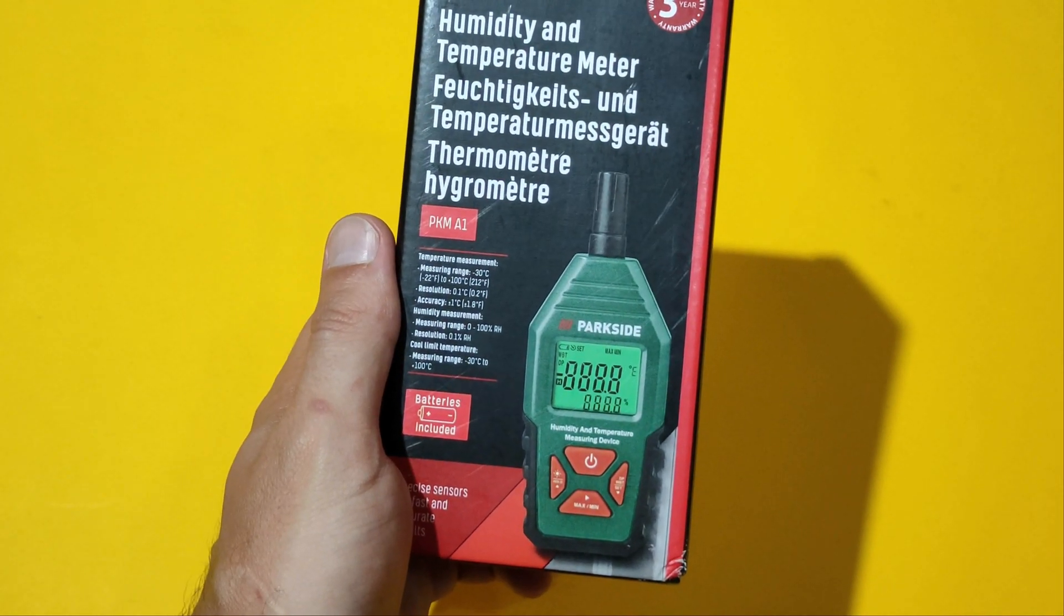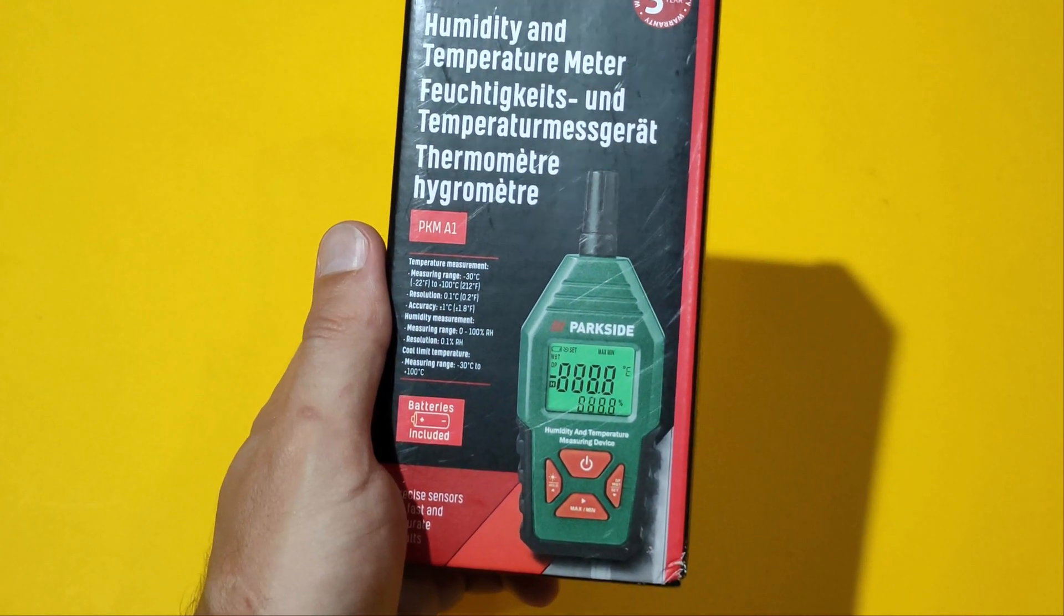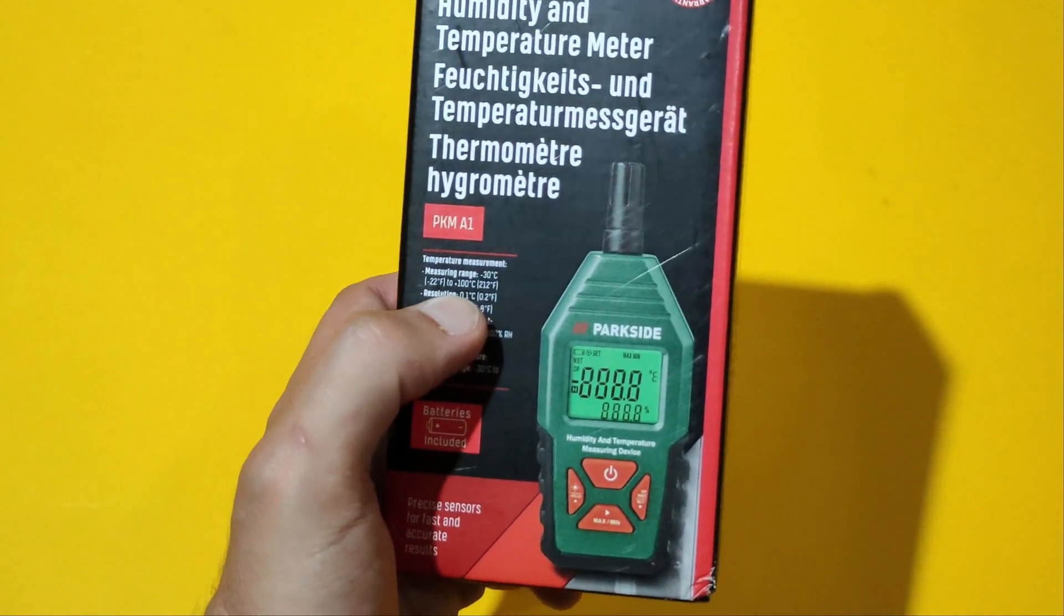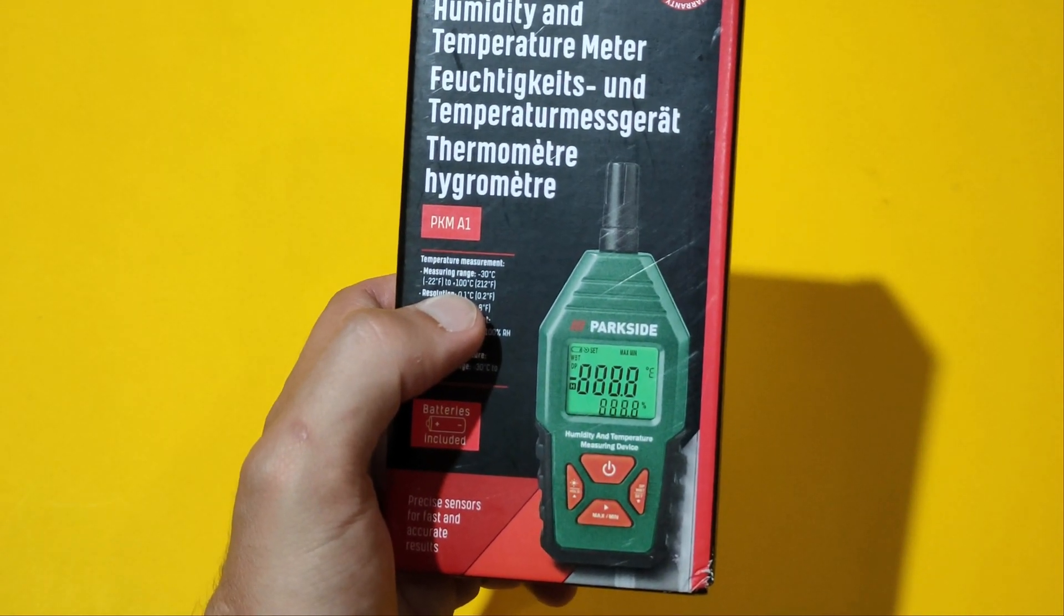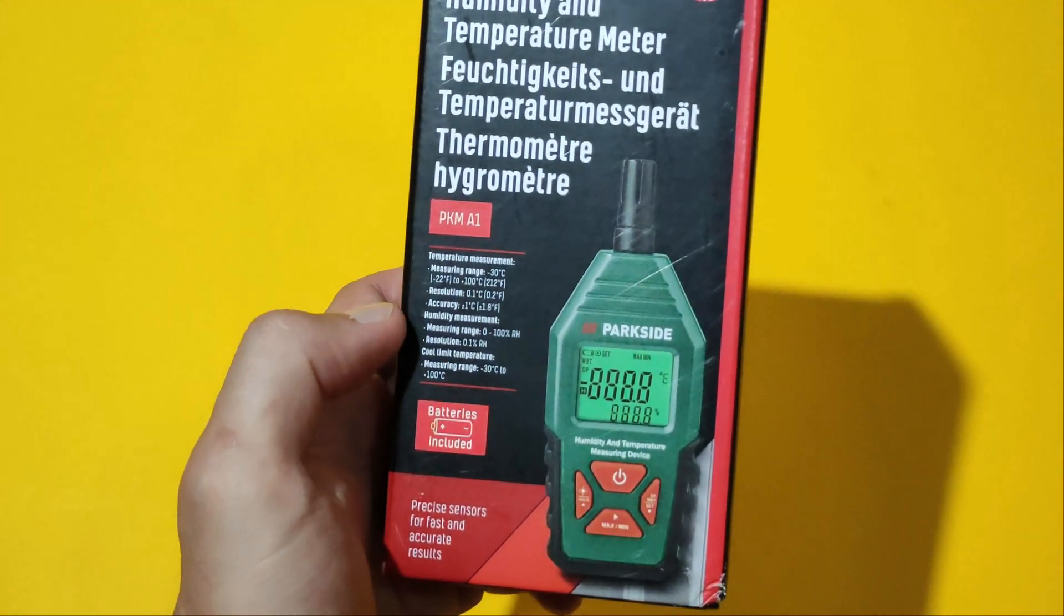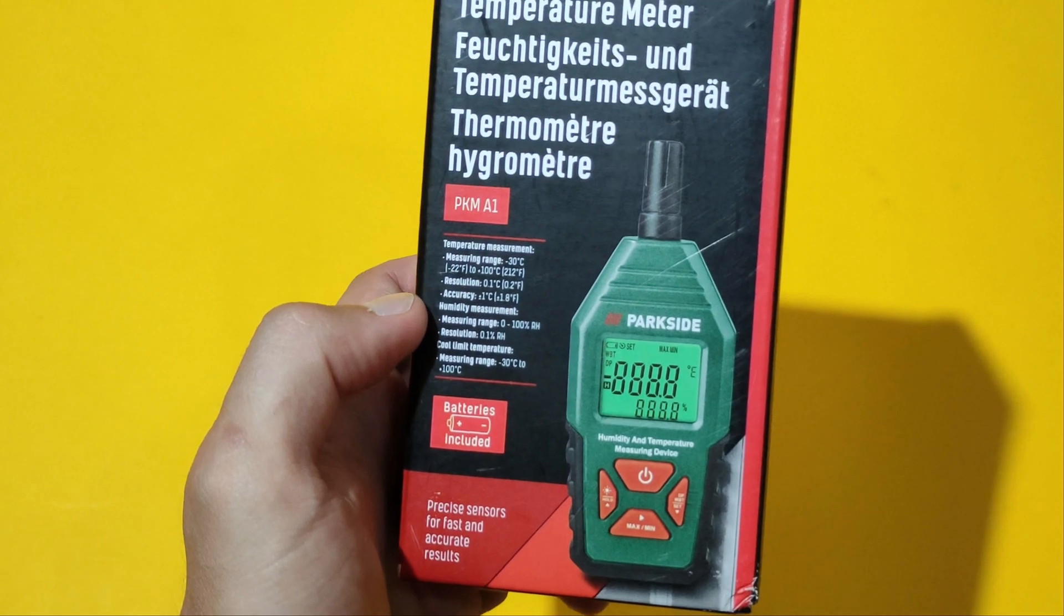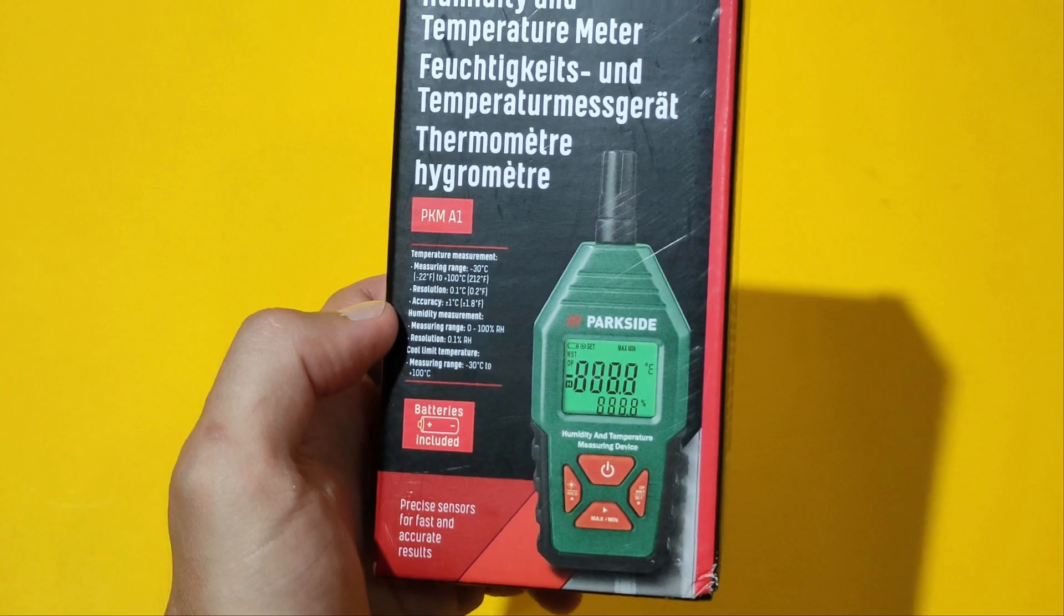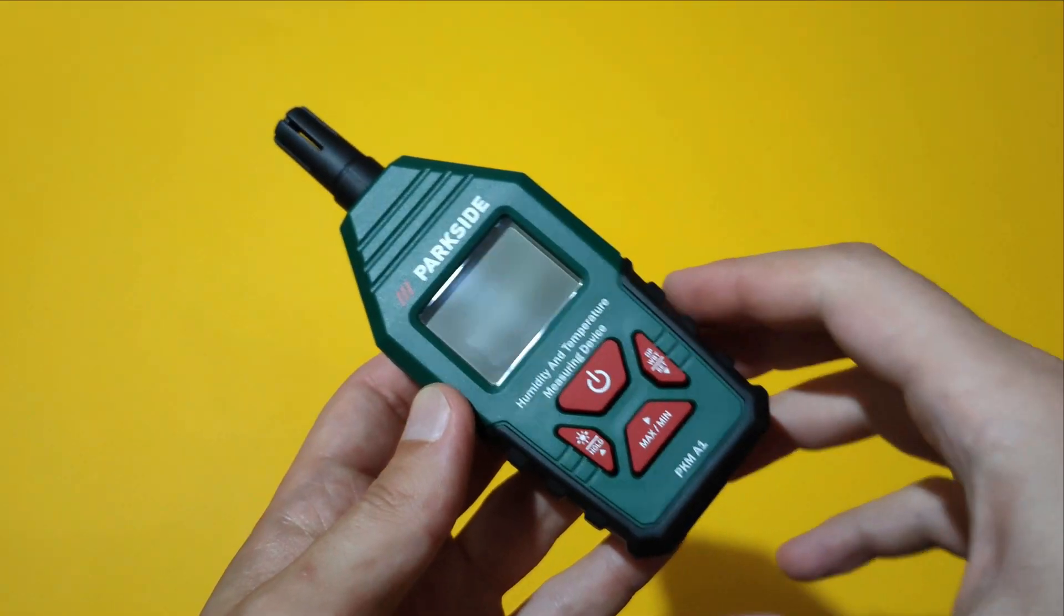The device can be used for measuring air temperature, dew point temperature, wet bulb temperature and relative humidity. The temperature measuring range is from minus 30 up to 100 degrees Celsius and the relative humidity measuring range is of course from zero up to 100%.